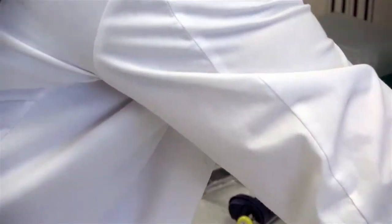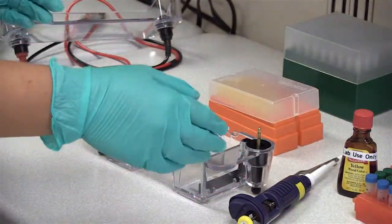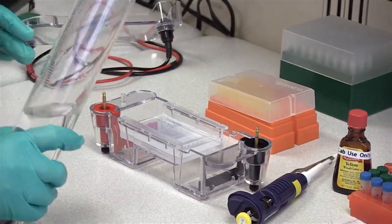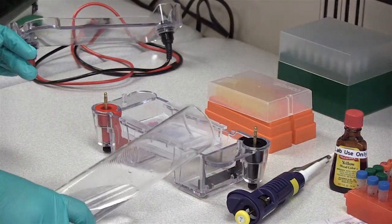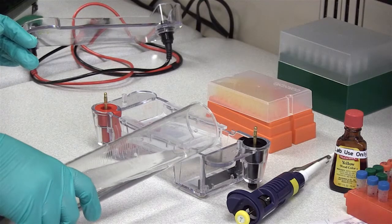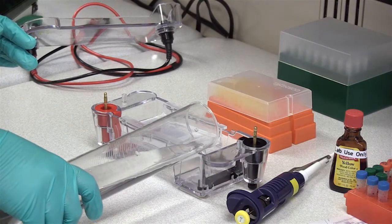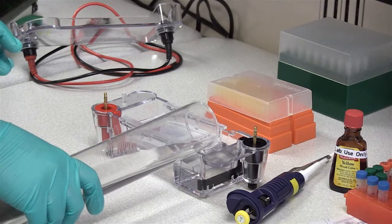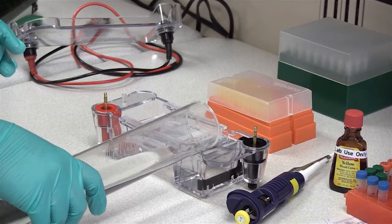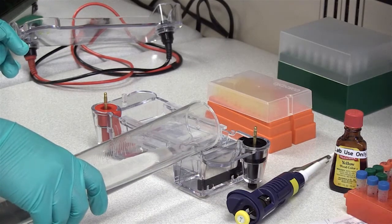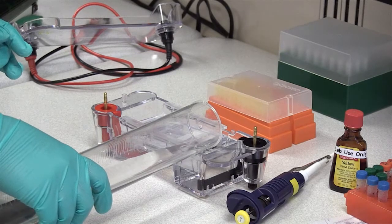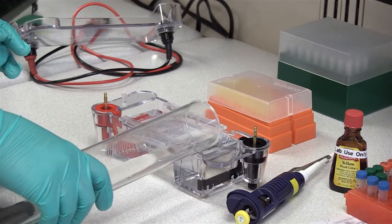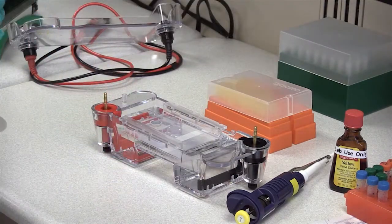Now that we have the tray firmly in the box, we're going to add our buffer. You want to add it to one of the wells to the side. And this horizontal chamber is also called a submarine chamber because you're going to have the buffer flow over the gel and completely submersive.